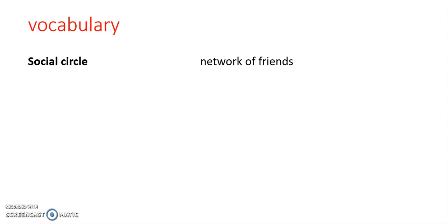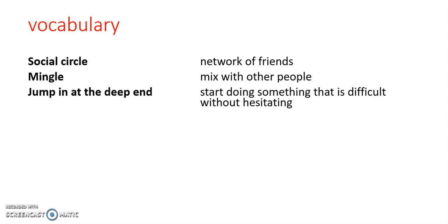Before I start the article itself, I'm going to introduce you to some vocabulary I've used. The first one is 'social circle,' which means your network of friends — the people around you who you interact with socially, whether online, face to face, or anything like that. Next, we're going to use the verb 'mingle' — to mingle means to mix and socialize with other people. Next, we have the idiom 'jump in at the deep end,' which means to start doing something that might be difficult without hesitating or worrying about it — you just jump in and start.